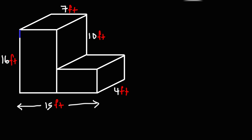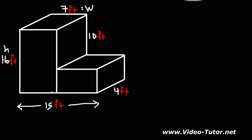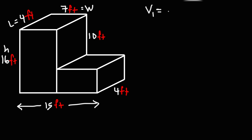Starting with the first one, we know the height of the rectangular prism on the left is 16. It has a length of 4 and a width of 7. So the volume for the first rectangular prism: we have a length of 4 feet times a width of 7 times the height of 16. So that's 448 cubic feet.